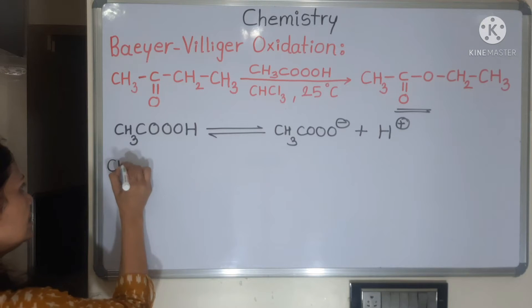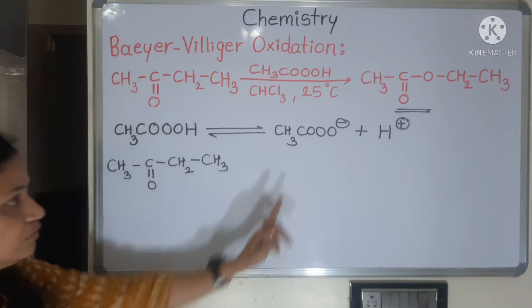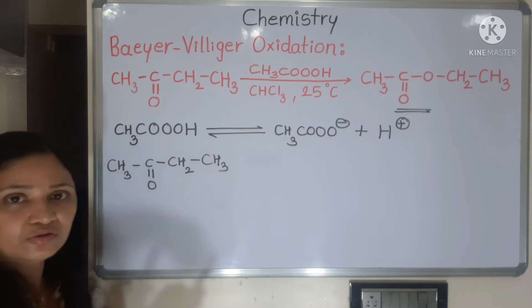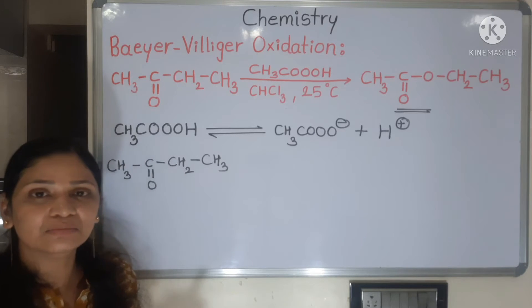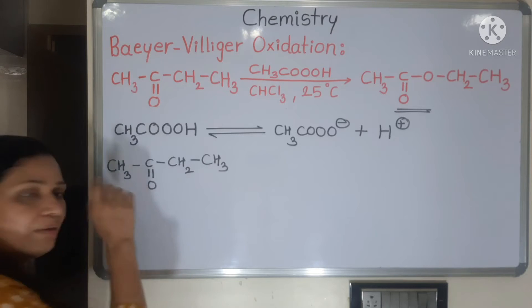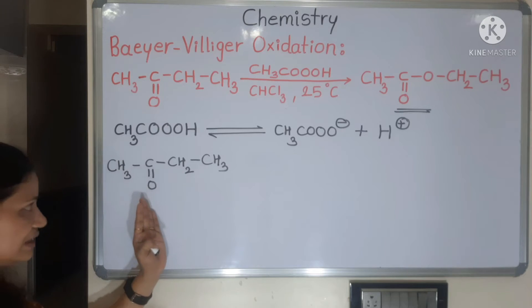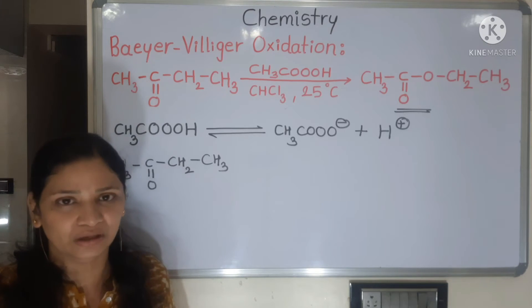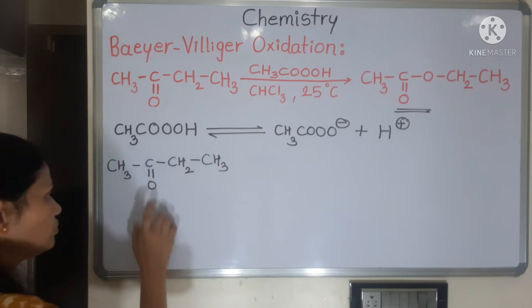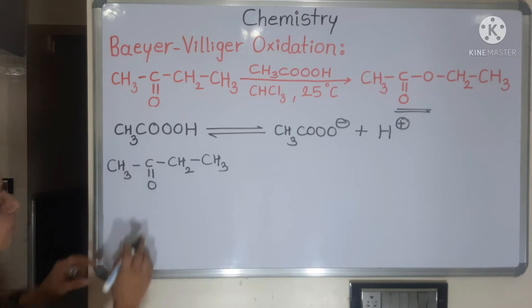Our reactant is CH3-C(=O)-CH2CH3. Now look at this — does it have any positive or negative character? Yes — remember that whenever you see a carbonyl group, oxygen has higher electronegativity than carbon. Electronegativity is the ability to pull electrons toward itself. So the electrons in the C=O bond are shifted toward oxygen, making oxygen partially negative and carbon partially positive. This applies to all carbonyl groups — aldehydes, ketones — always remember this.